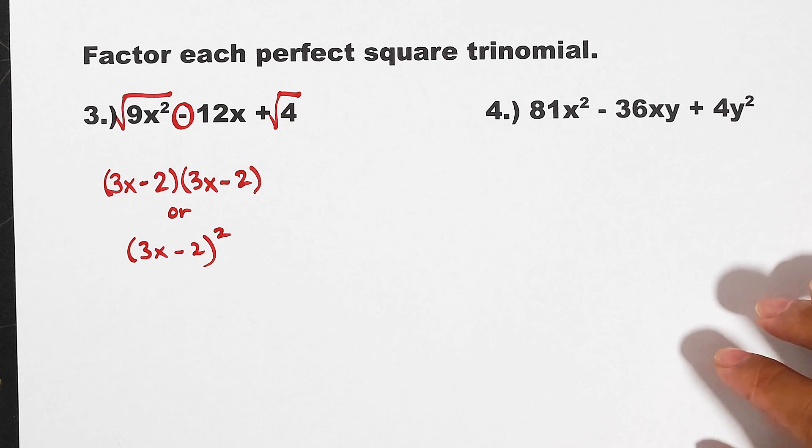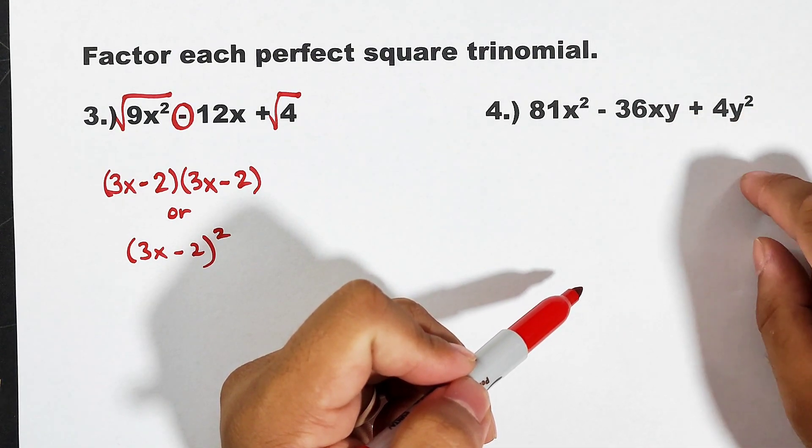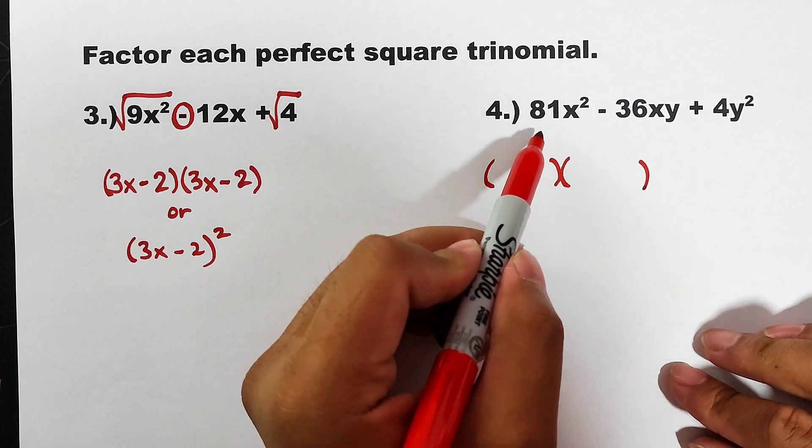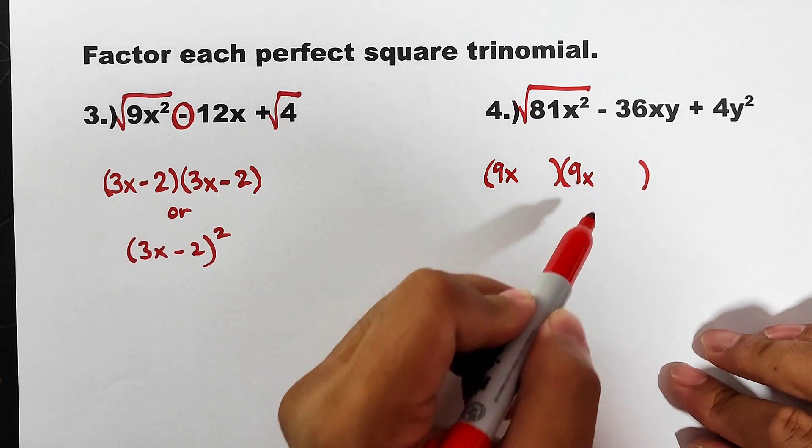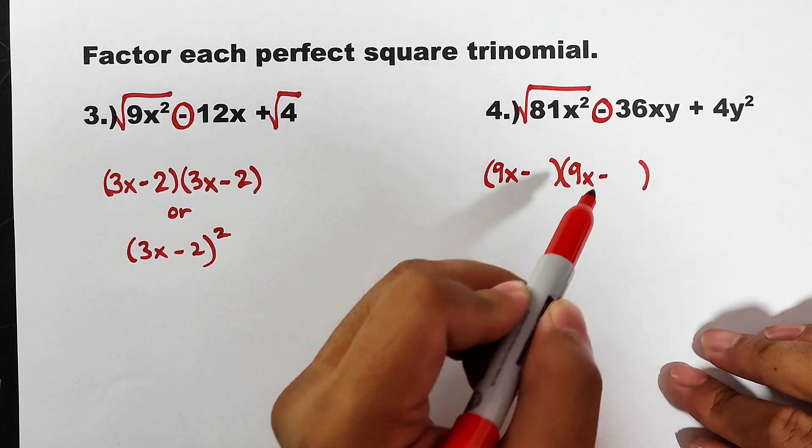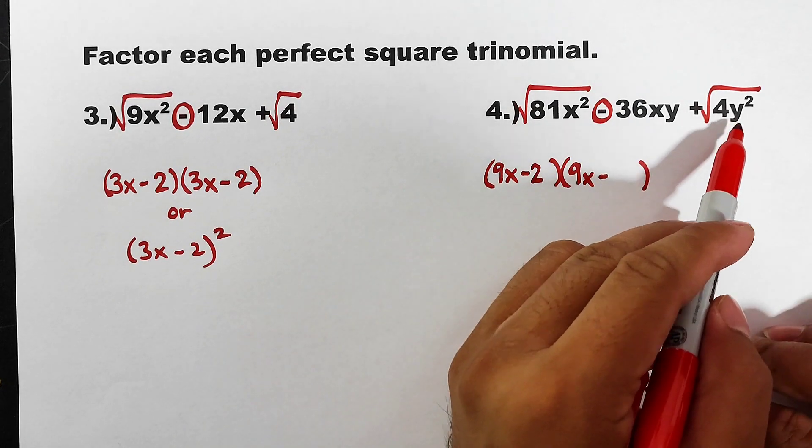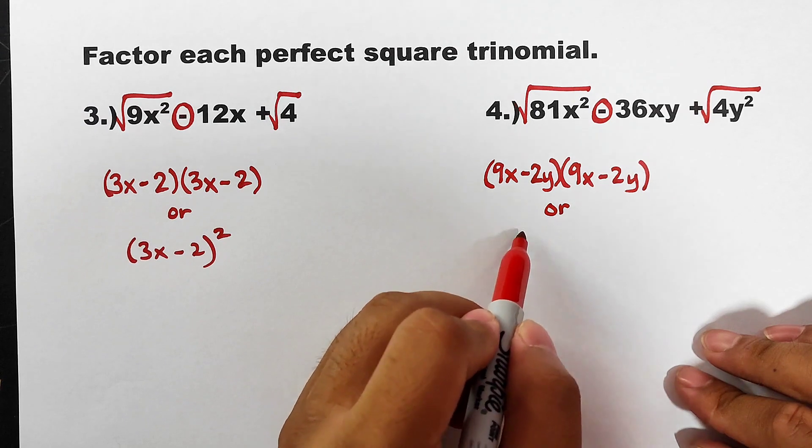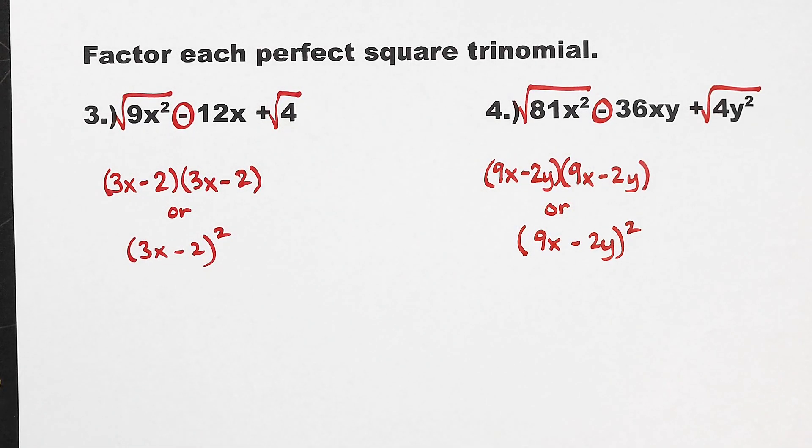Now guys, let's try number 4. We are given 81x² - 36xy + 4y². Don't worry about the variable at the end because it's easy. Prepare two sets of parentheses. Square root of 81 is 9, square root of x² is x, so that is 9x. Copy the sign, minus. Get the square root of the last term: square root of 4 is 2, square root of y² is y, so this must be 2y. And express your factors as the square of binomials, so we can have (9x - 2y) raised to the second power.